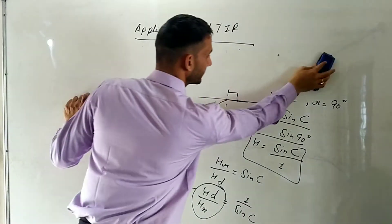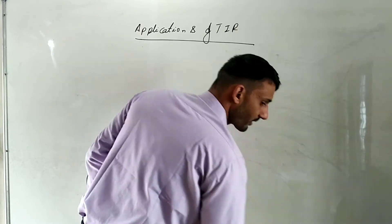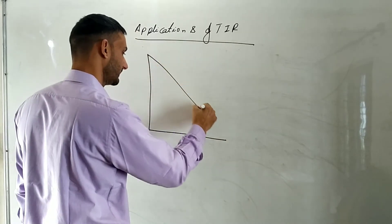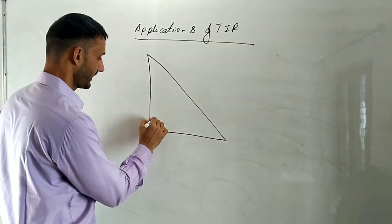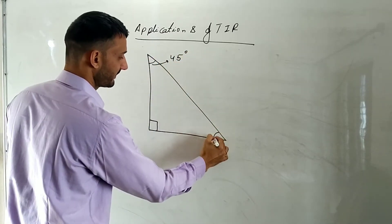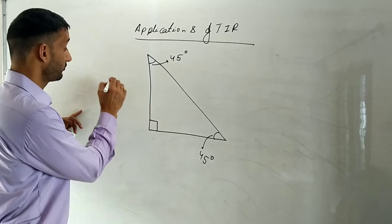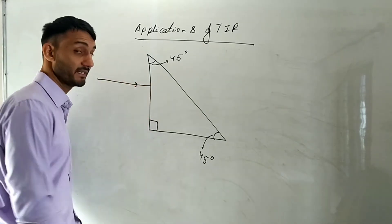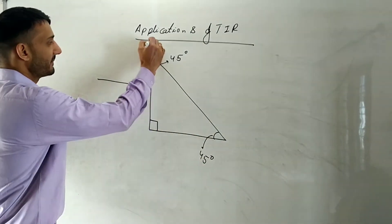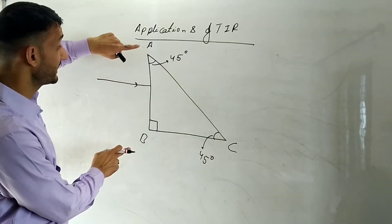Now let us understand how light deviates through a prism with an angle of 90 degrees. Suppose this is a right-angle prism — here one angle is 90 degrees, and the other two angles are each 45 degrees, making it a right-angle isosceles prism. You may find questions of this kind in exams, where a light ray comes in and you are asked to complete the diagram with all the marked angles. We name the vertices A, B, C.